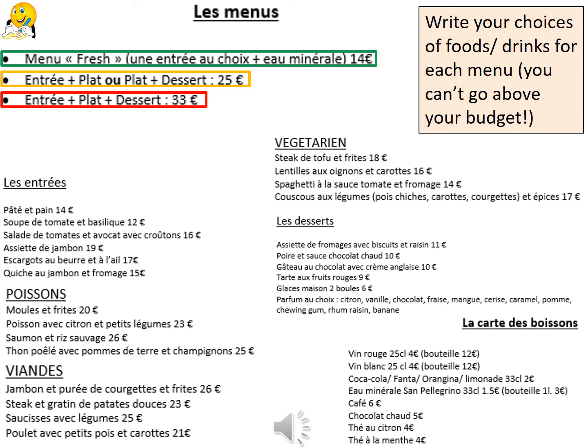It specifically tells you what you need to choose from. For example, the green task, you need to be looking at une entrée. So you need to find where les entrées is, and you've got different choices and each of them has got a price. You also need to have an eau minérale. So if you go into your drinks section, you will need to find eau minérale, see how much it costs, and it will help you decide on which entrée you can have.